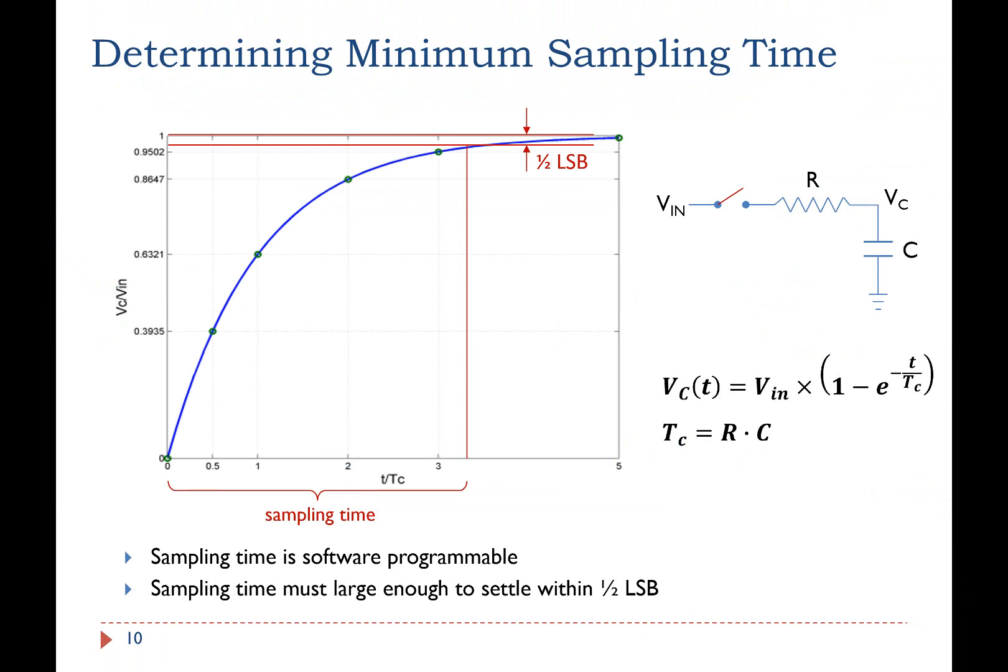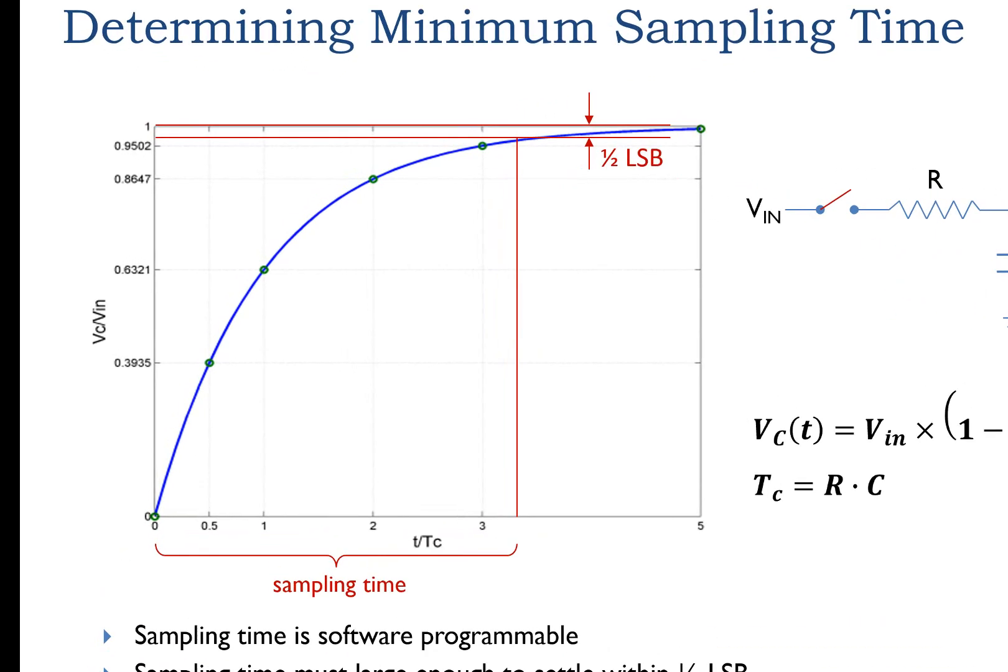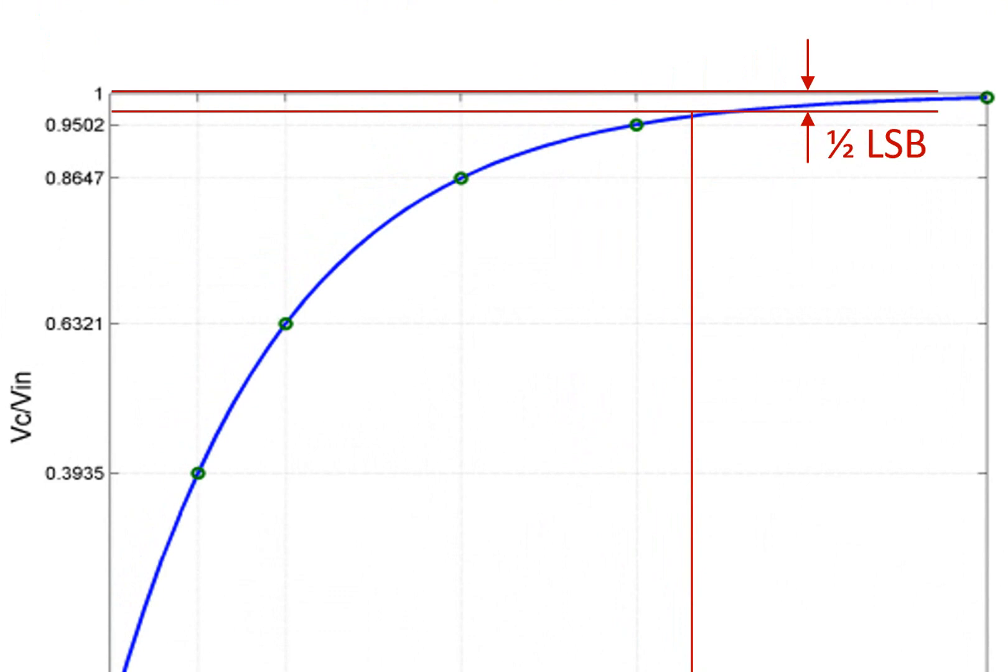As shown in the previous diagram, the sample and hold component consists of a resistor and a capacitor. Software can program the sampling time, that's how long should this switch remain closed, so that the input voltage is accurately sampled. By the end of the sampling time, the voltage in the capacitor must be settled to the required quantization error range. The difference between the voltage in the capacitor and the input voltage should be less than half an LSB. This is a fundamental requirement to obtain accurate conversion results.